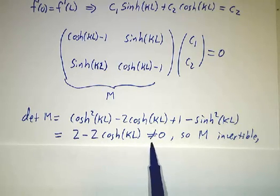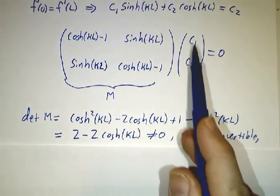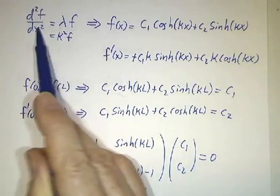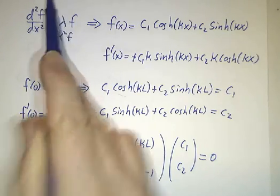In particular, it's not 0. Since M is invertible, the only solution to this equation is c₁ equals c₂ equals 0. In other words, the only solutions to our eigenvalue equation are the 0 function, so this can't be an eigenvalue.